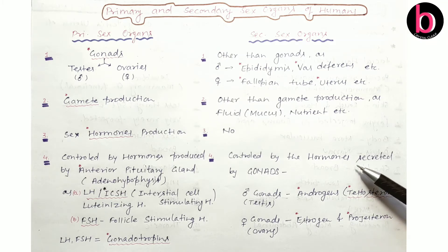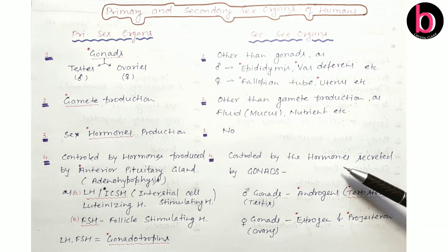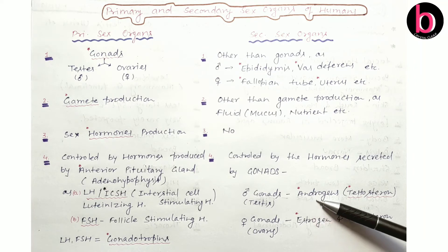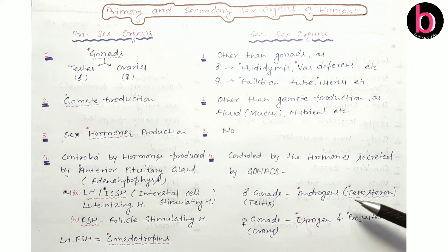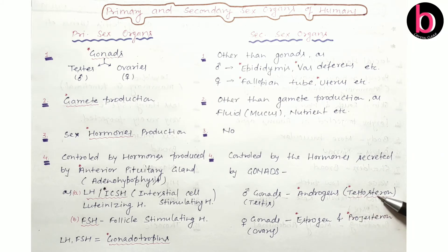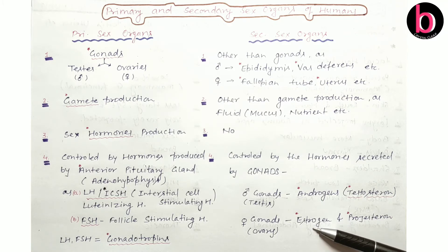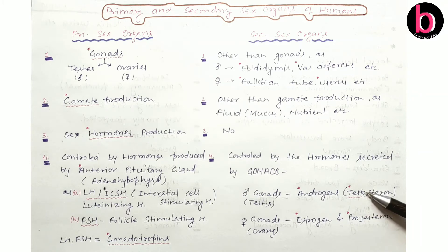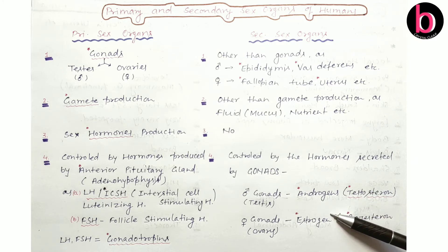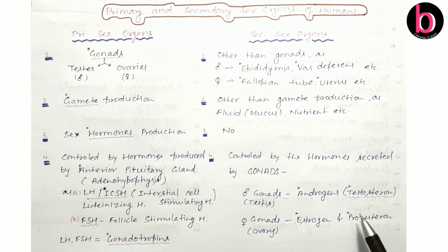When we discuss secondary sex organs, they are controlled by hormones secreted by the gonads. By male gonads or testes, there is secretion of androgens — a group of hormones in which testosterone is the major one. For female gonads, that is the ovary, there is secretion of estrogen and progesterone. Testosterone is related with secondary sexual characters of male, while estrogen is related with secondary sexual characteristics of female. Progesterone is known as the pregnancy hormone.